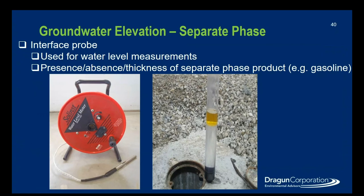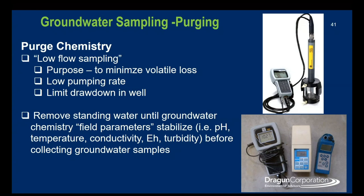Another tool used for groundwater elevation is an interface probe. This tool is used when there may be free products or a separate phase product in a well — it can differentiate between the separate phase and water, giving us both a free product measurement and the depth to water. For groundwater sampling and purging, while we purge the well, we check the chemistry to ensure we're getting proper representative water. We use a low flow sampling method to minimize volatile loss, using a low pumping rate that limits drawdown in the well. The purpose of purging is to remove standing water until groundwater chemistry is stabilized — field parameters including pH, temperature, conductivity, EH, and turbidity are stabilized before we collect our groundwater sample.